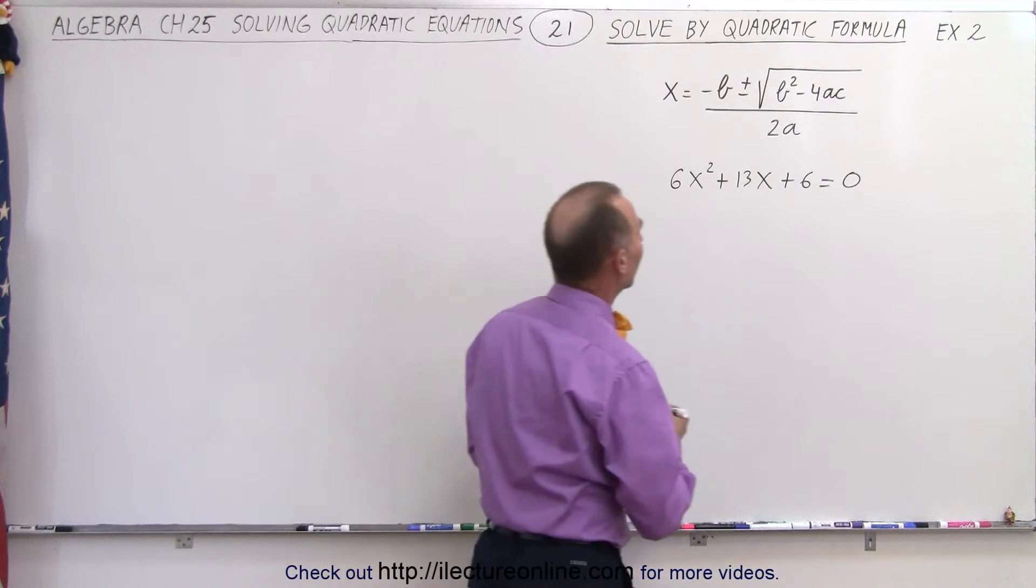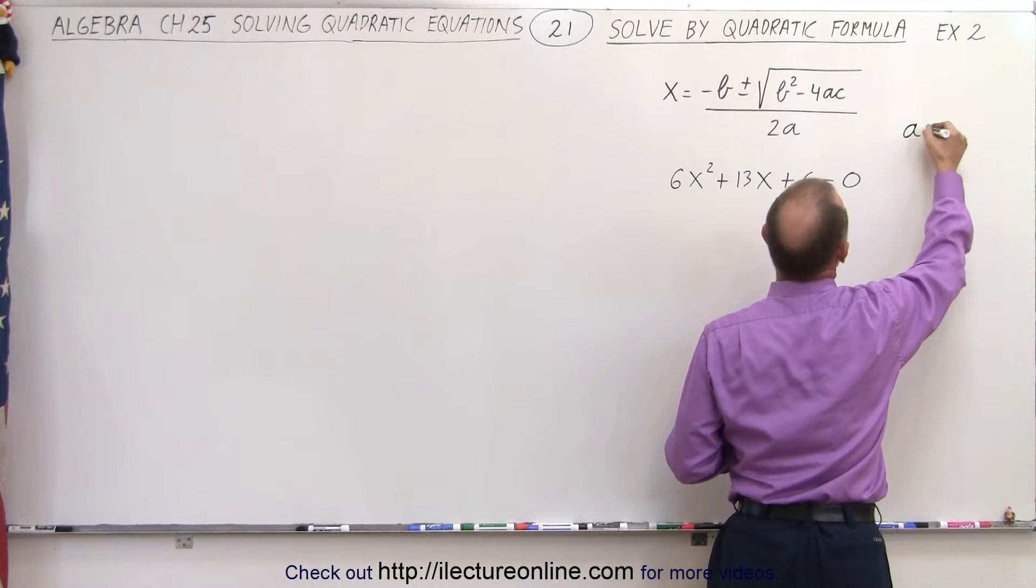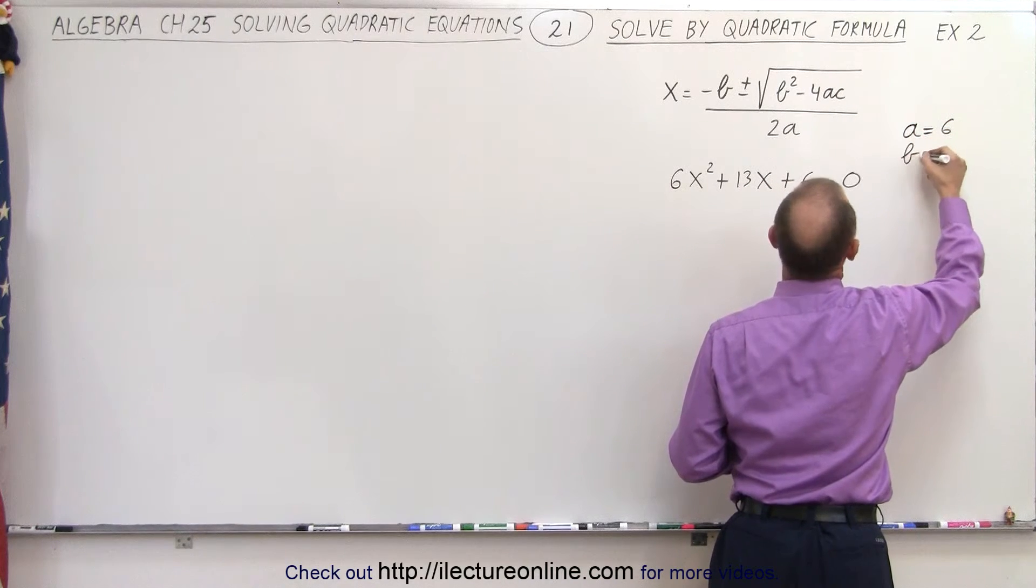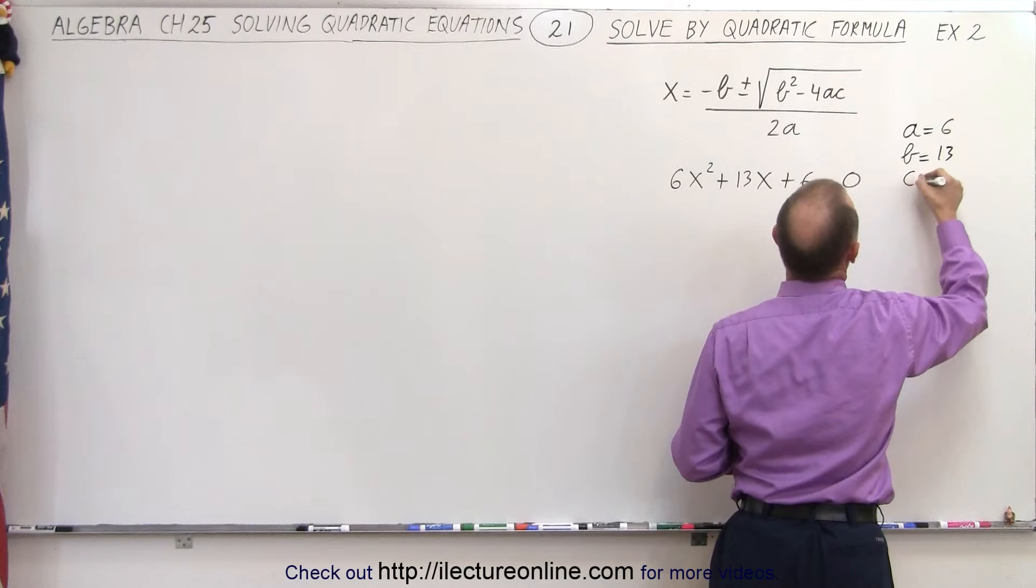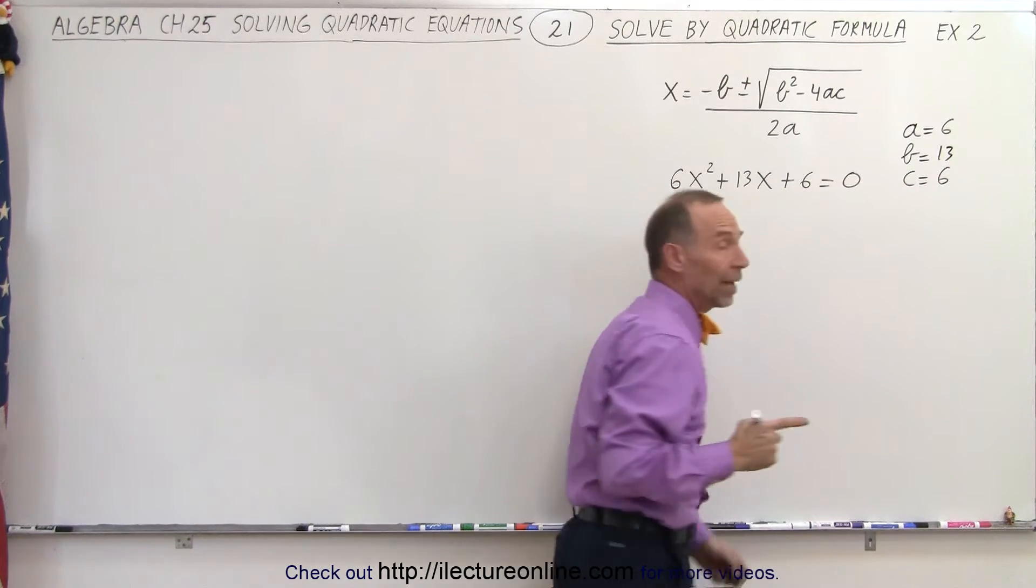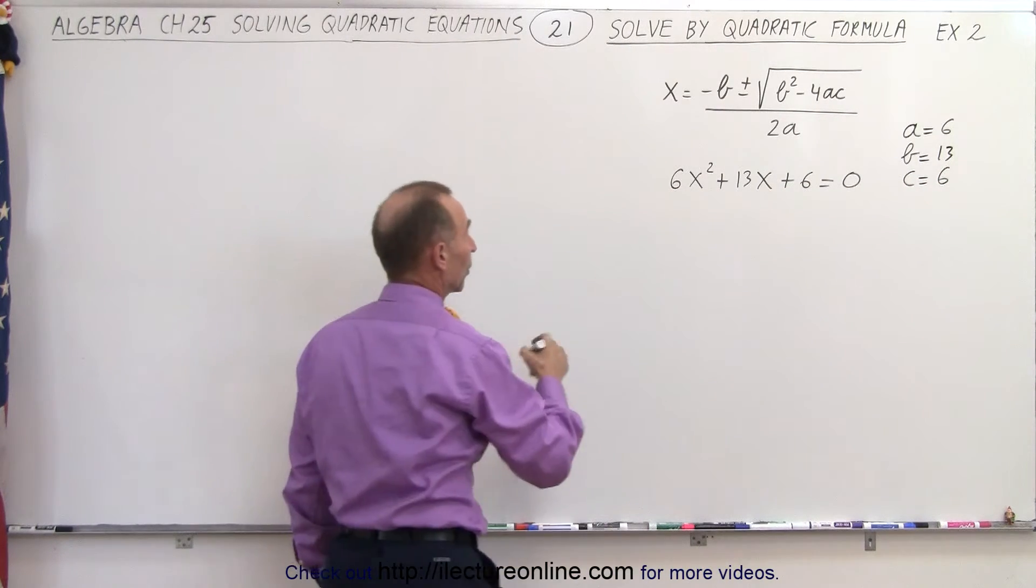Again, we need to recognize what our coefficients are. So in this case, a is equal to 6, b is equal to 13, and c is equal to 6. So let's go ahead and plug those numbers into our quadratic formula.